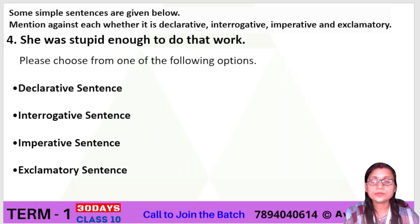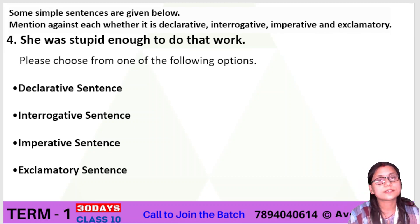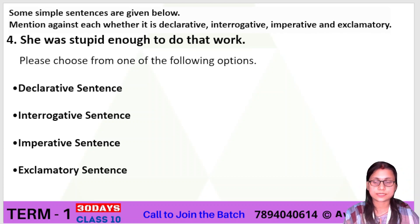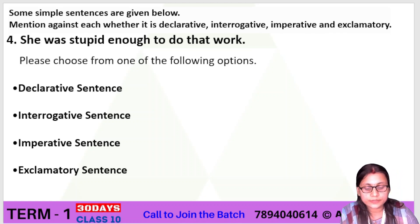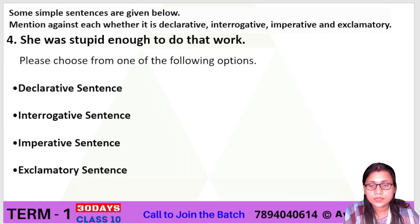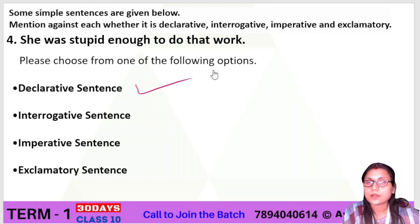Now let's move on to number four: 'She was stupid enough to do that work.' Quickly tell me the right answer — whether it is a declarative sentence, interrogative sentence, imperative sentence, or exclamatory sentence. Yes, all of you have given the right answer. This is a declarative sentence — it is a statement, and it refers to a declarative sentence.